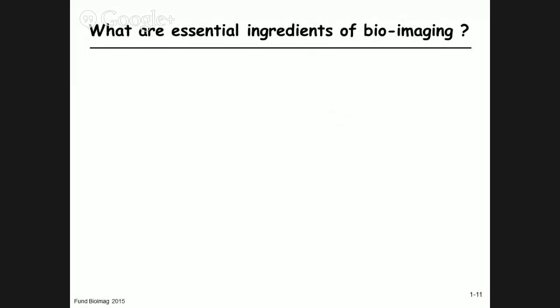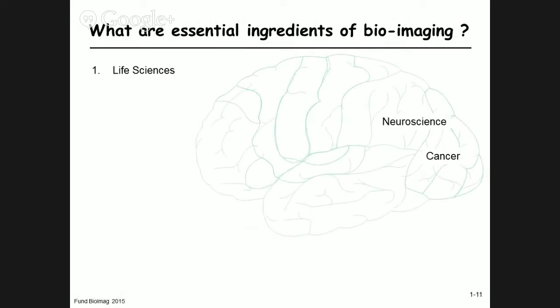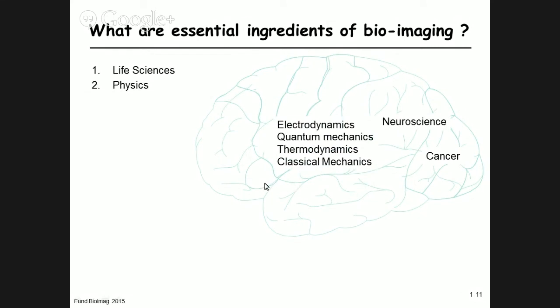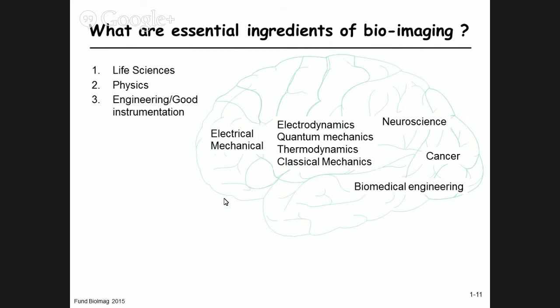The essential elements of bioimaging span many disciplines. For the life sciences side, consider fields like neuroscience and cancer research. We also need physics — electrodynamics, quantum mechanics, thermodynamics, and classical mechanics, going all the way back to first-semester curriculum at EPFL. But physics and life sciences alone don't give us an instrument; we also need electrical, mechanical, and biomedical engineering.